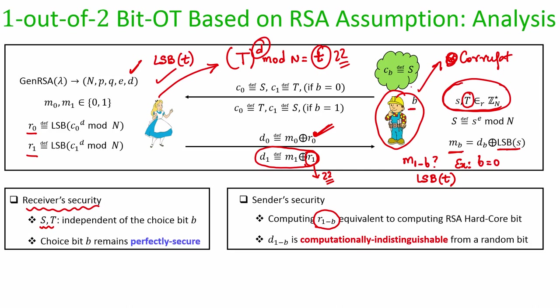Since computing R_{1-b} = LSB(t) requires solving the RSA hardcore function, which is a hard problem, this mask is computationally indistinguishable from a random bit for Bob. Therefore, the masked message D_{1-b} is also computationally indistinguishable from random, and Bob learns nothing about message M_{1-b}.